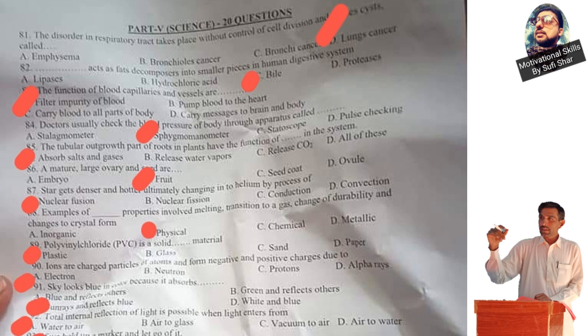Question number 82. A substance that acts as fat decomposed into smaller pieces in the human digestive system. Options: A - lipase, B - hydrochloric acid, C - bile, D - proteins. The correct answer is C - bile.